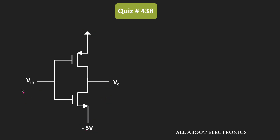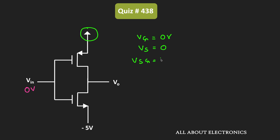First, let's say the input is equal to 0V. When the input is equal to 0V, then the gate voltage for both MOSFETs is equal to 0V. For the PMOS, the source terminal is also connected to the ground terminal, so VS is also equal to 0. If we see VSG, that is VS minus VG, then that is equal to 0. Since it is less than the threshold voltage, this PMOS transistor will remain in the OFF condition.